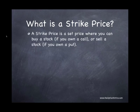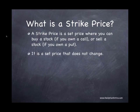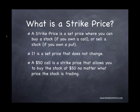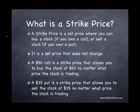What is a strike price? A strike price is simply a point or a set price where you can either buy something if you own a call, or sell something if you own a put. These are set prices — the set price does not change. For example, if I have a $50 call, that would allow me to purchase stock at $50 no matter where the stock is trading. So no matter how high or how low the stock goes, I have the ability to buy stock at $50.